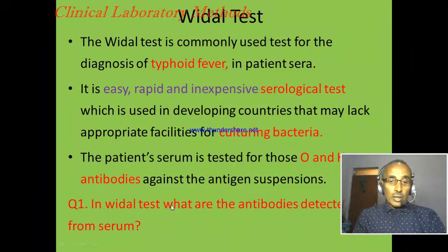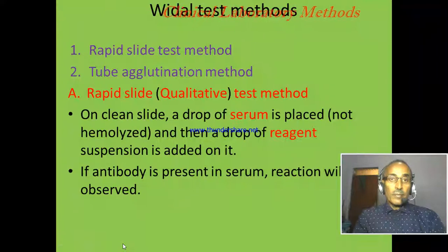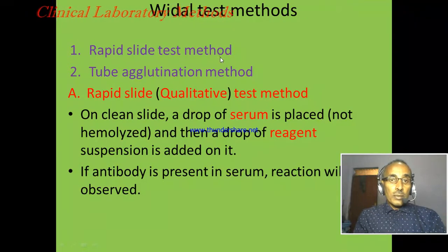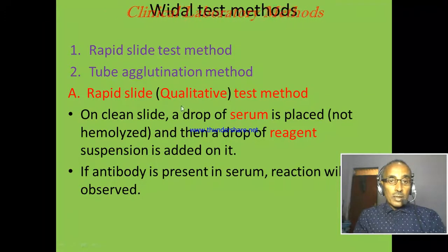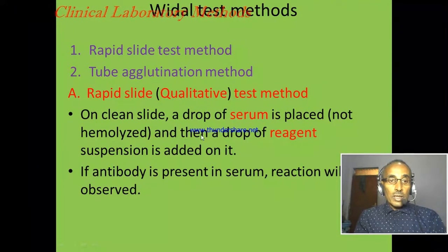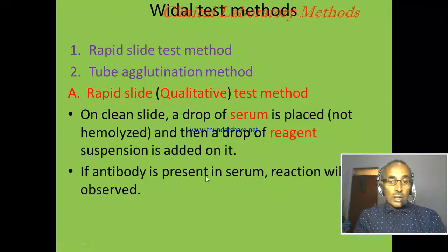There are two types of WIDAL techniques: the rapid slide test method and the tube agglutination method. The rapid slide test is a qualitative test, meaning it only detects the presence or absence of a substance. In this technique, one drop of serum and one drop of reagent are mixed on a clean dry slide. If antibody is present, a reaction will be observed after two minutes.